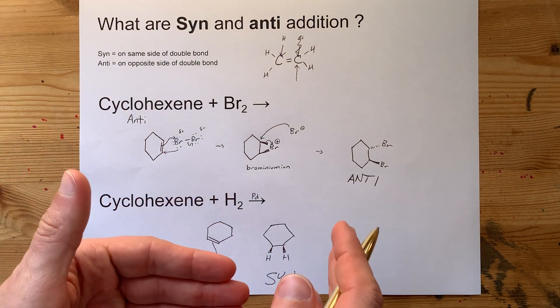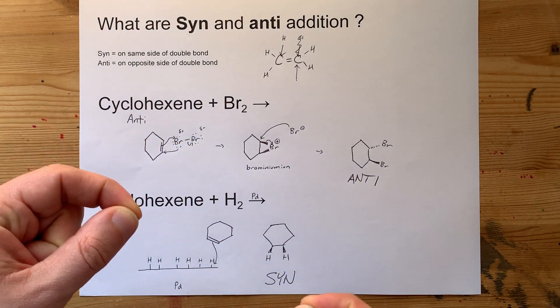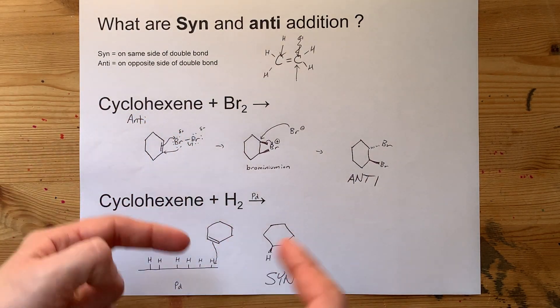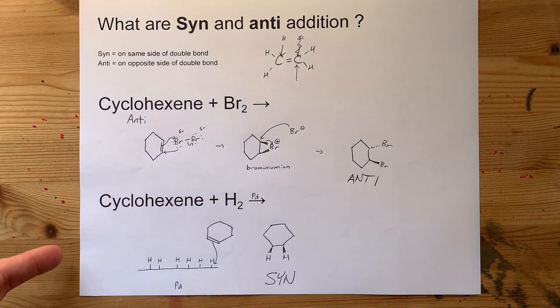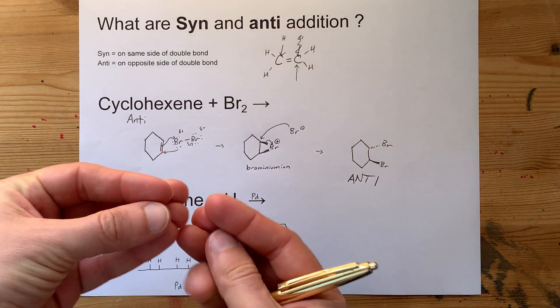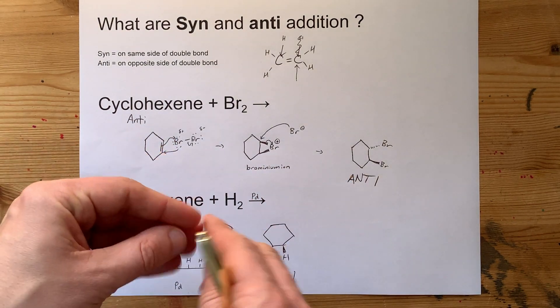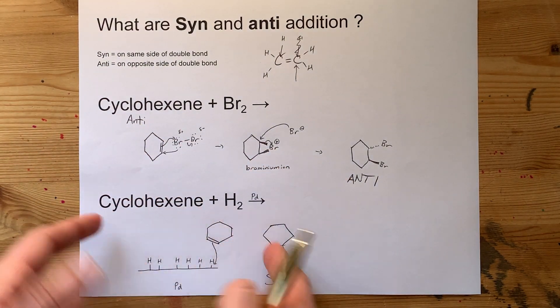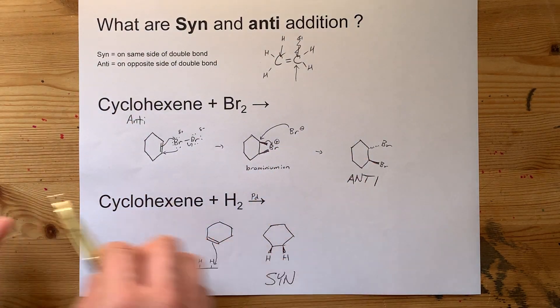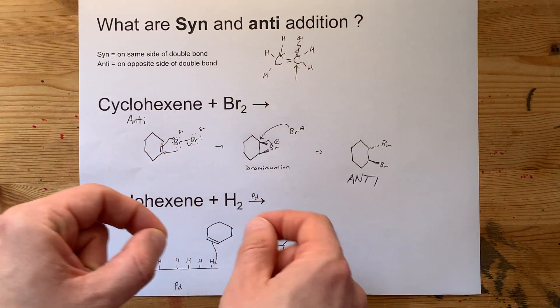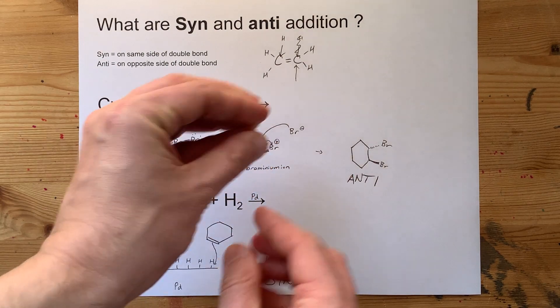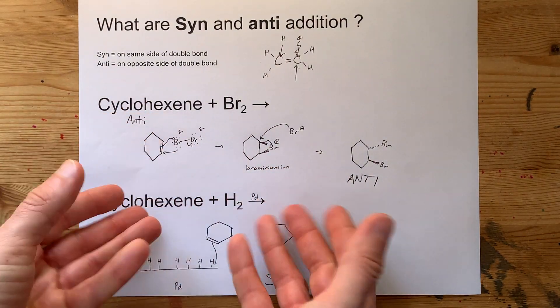It's all about the configuration of the two things you're adding across a double bond that control whether or not we call it syn or anti. What actually controls whether a reaction is syn or anti actually comes down to the mechanism. Now I kind of skipped over the mechanism here, but you have to be able to push the arrows around and understand where the positives and negatives can and cannot attack from.